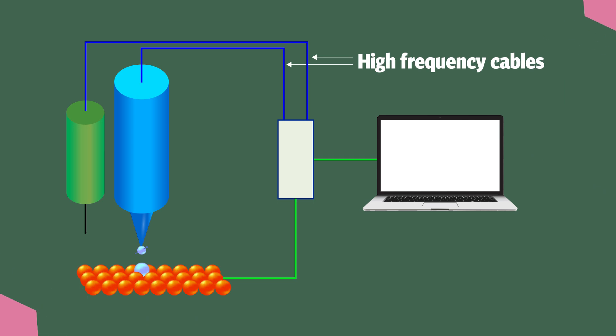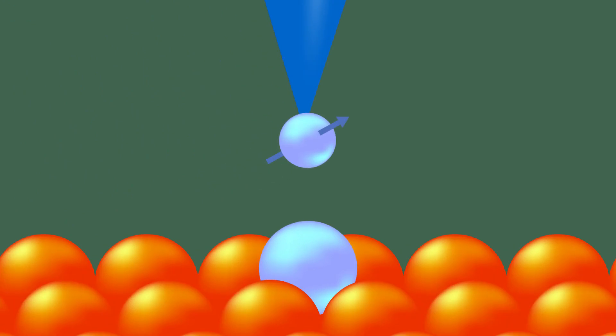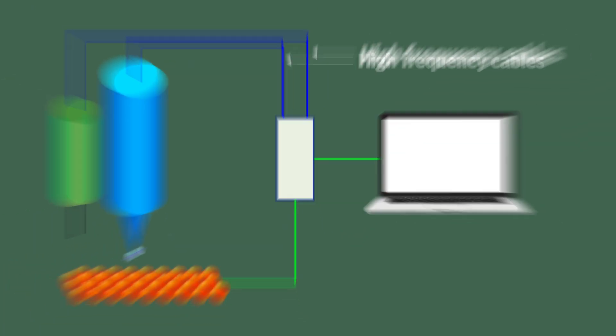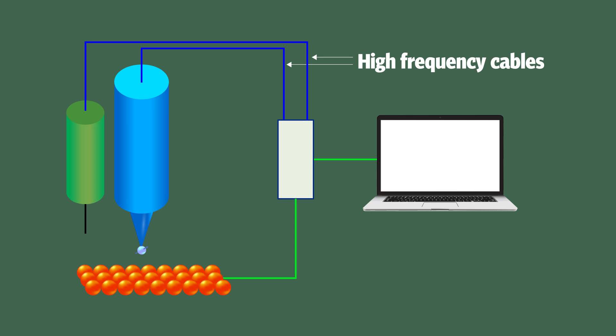Dr. Bae's team equipped their new STM with high-frequency cables, one for the STM tip and one for an antenna. These high-frequency cables allow the researchers to inject microwaves into the gap between the STM tip and sample surface to manipulate a quantum property of electrons and nuclei called spin. This setup allows them to apply multiple microwaves and radio waves across a wide range of frequencies and temperatures.